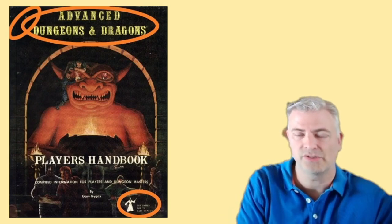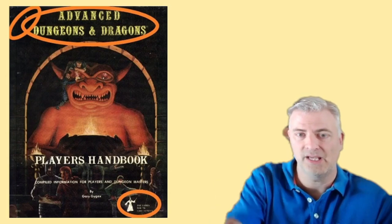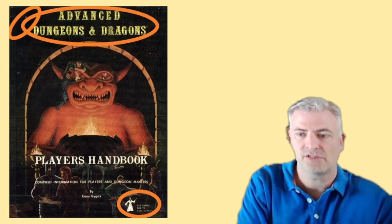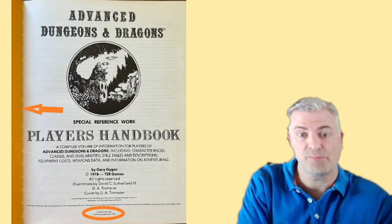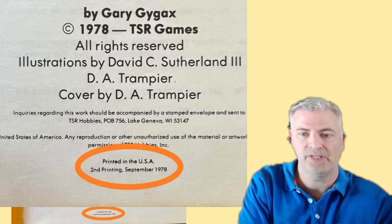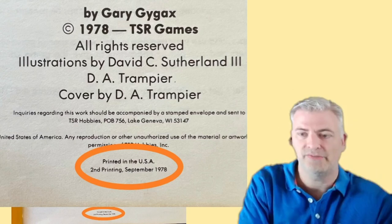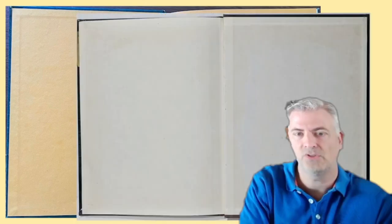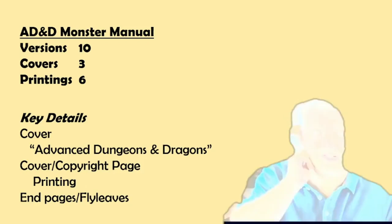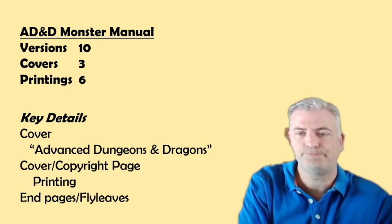When we want to identify the Player's Handbook, there are a couple of key places to look. You look at the words Advanced Dungeons & Dragons on the cover — where they're placed — and later there'll be a yellow bar in the top corner. At the bottom you have a logo, which starts off as the wizard logo. You also look at the end pages or fly leaves, which are either orange or white. And at the very bottom of the copyright page, it'll say 'Printed in the USA' and give you a printing number and date. For the Player's Handbook, there are 10 different versions but only three different types of covers and six different printings.